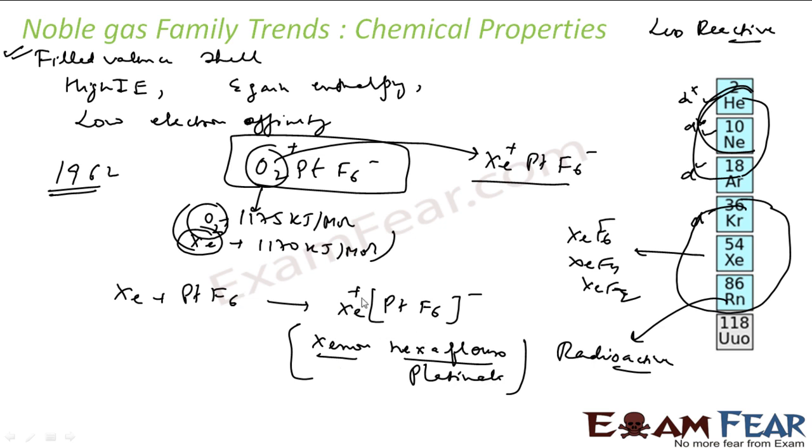This compound is called Xenon hexafluoride platinate. And after this, once this, this was the first compound prepared from a noble gas.